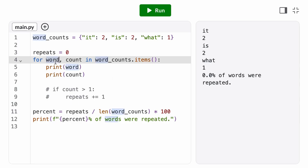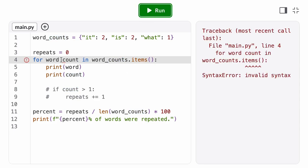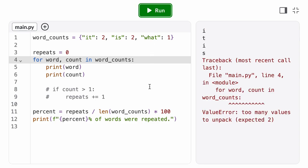On each iteration, the loop variable word contains the next key, and the loop variable count contains the next value. Be extra careful with this syntax, because it's easy to forget the comma or the dot items, and end up with a weird error.